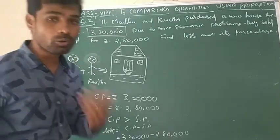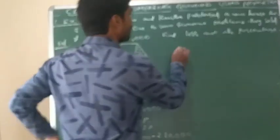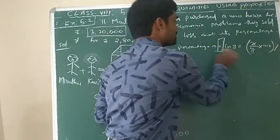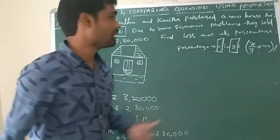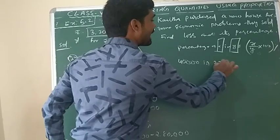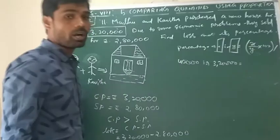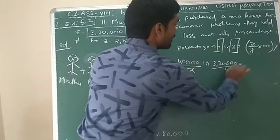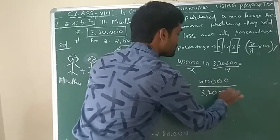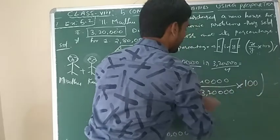Now we want the loss percentage. Percentage of x in y equals x divided by y into 100. Here x is the loss 40,000, and y is the cost price 3,20,000. So loss percentage = 40,000 / 3,20,000 × 100.